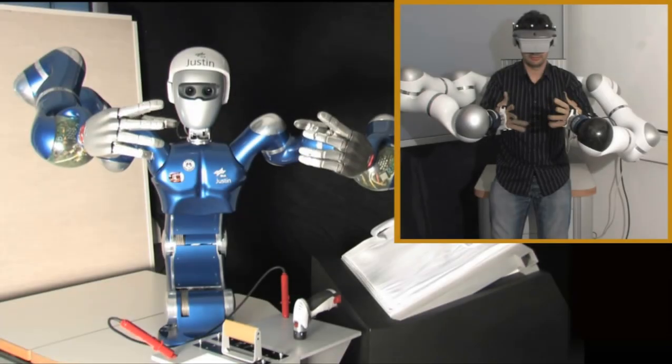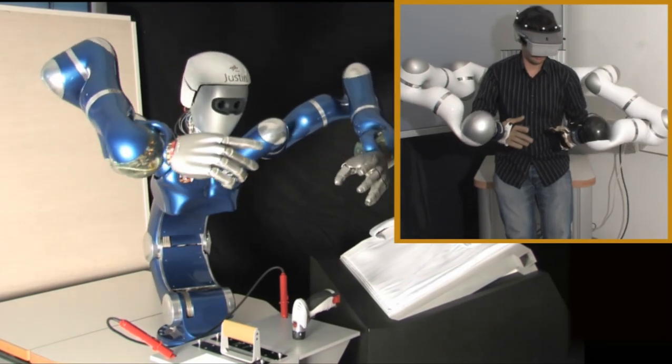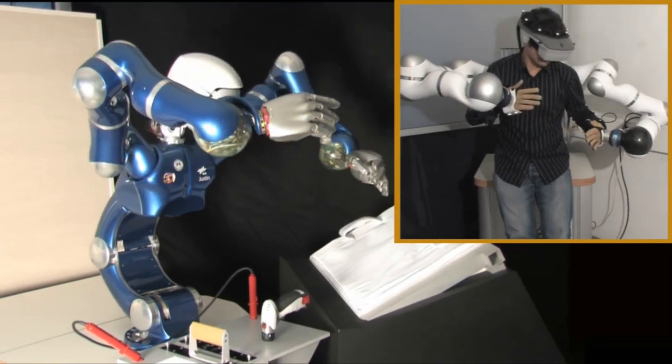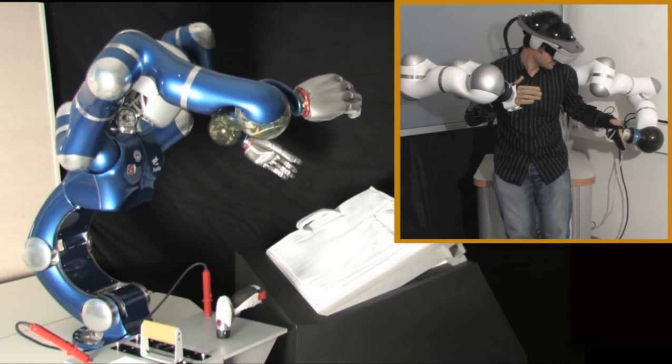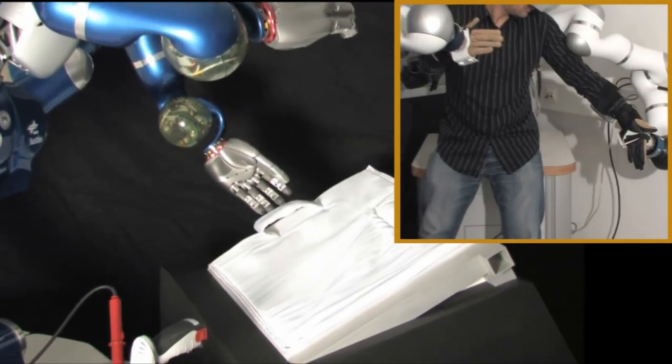Another application is tele-manipulating robots. By coupling the DLR humanoid robot Justin with a bimanual haptic device, a highly transparent tele-presence system can be achieved.